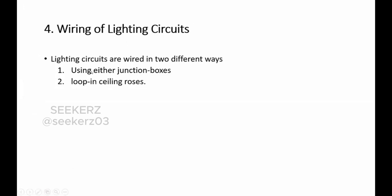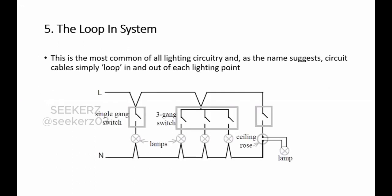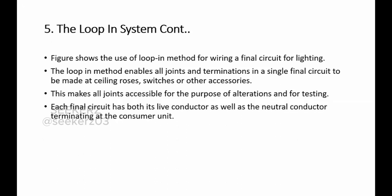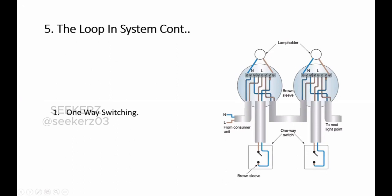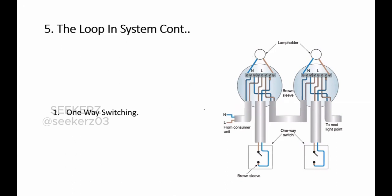There are two ways we use looping in the ceiling process. There are several types of switching we can use: one-way switching, two-way switching, and intermediate switching. According to our switching type, we can use this looping process and switches in our lighting circuit wiring. Let's see how one-way switching is achieved in this wiring diagram.